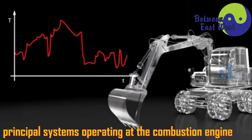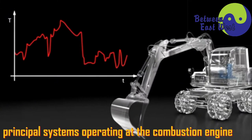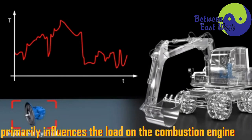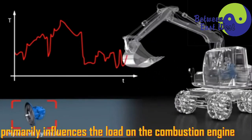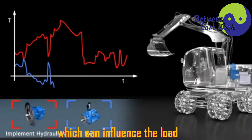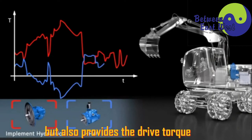There are now two principal systems operating at the combustion engine. One is the implement hydraulics, which primarily influences the load on the combustion engine. And the other is the HFW, which can influence the load but also provides the drive torque.